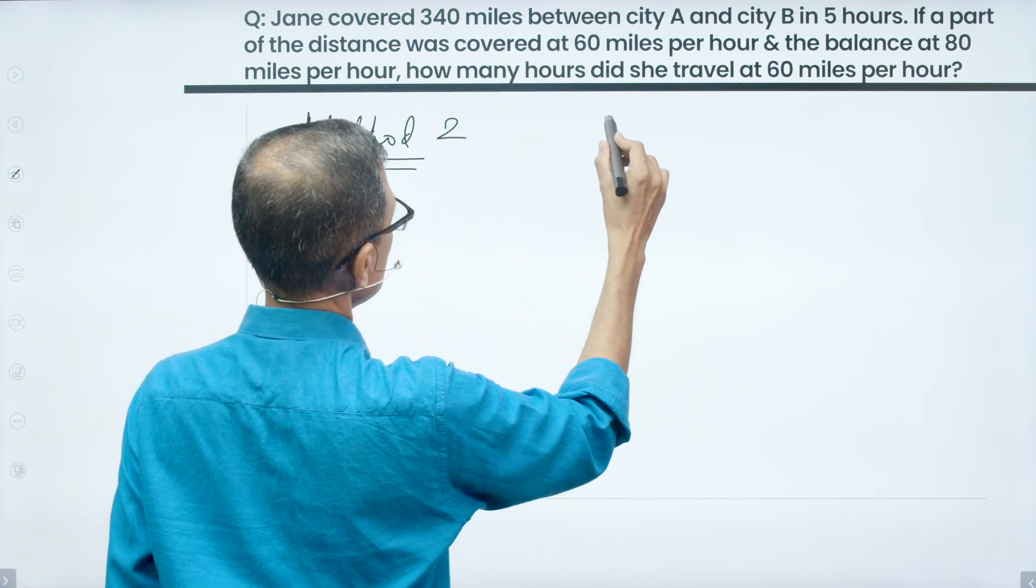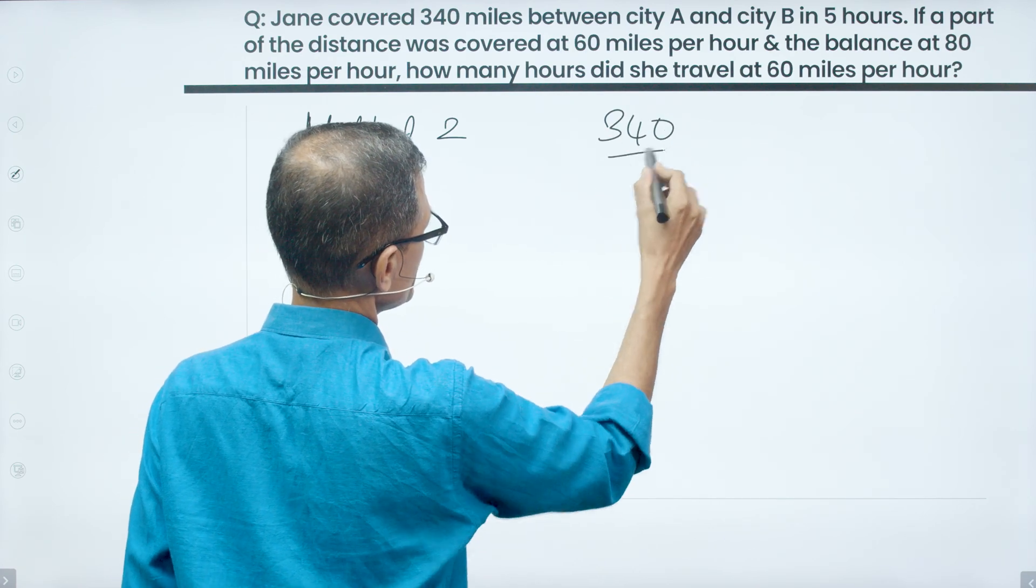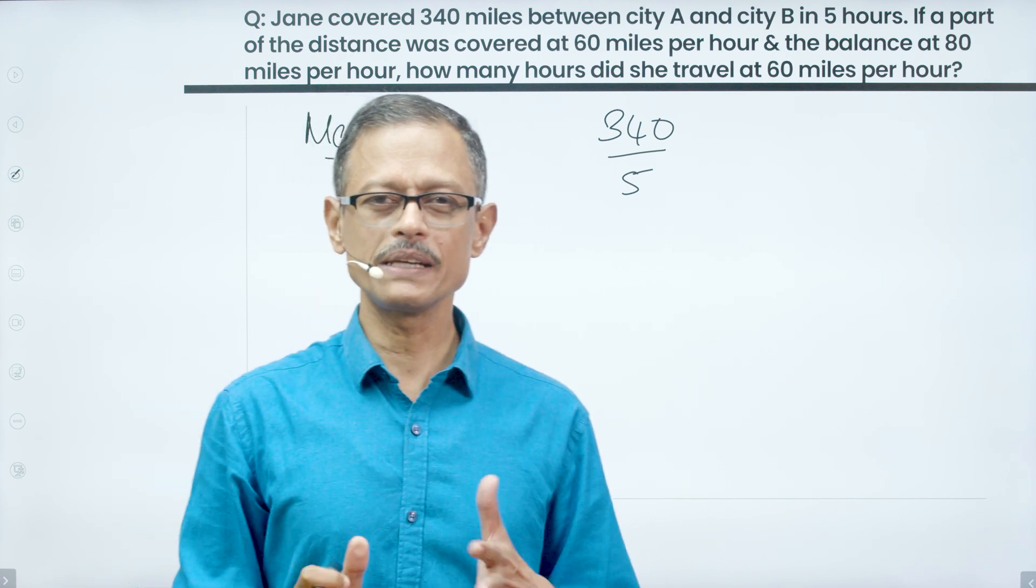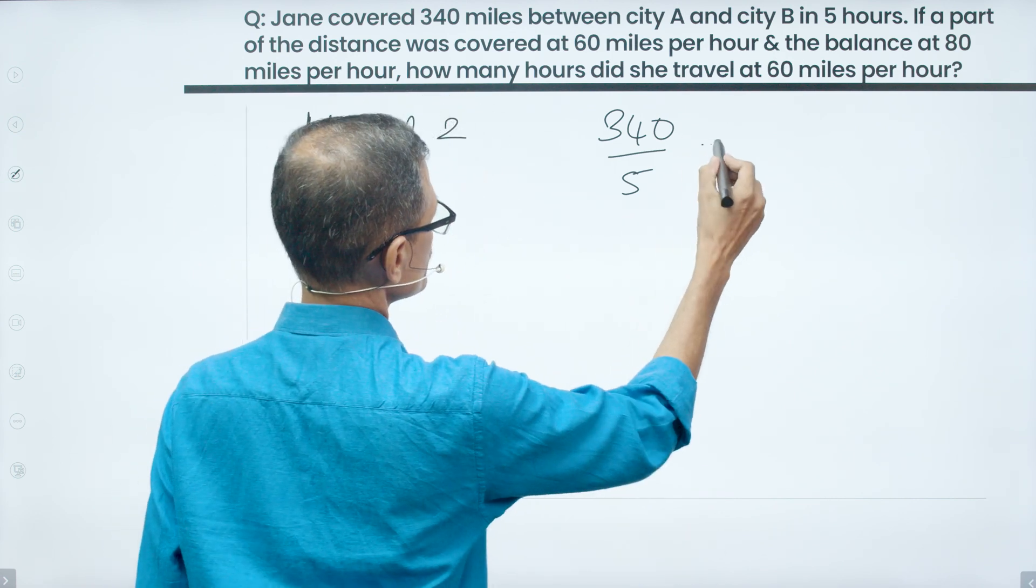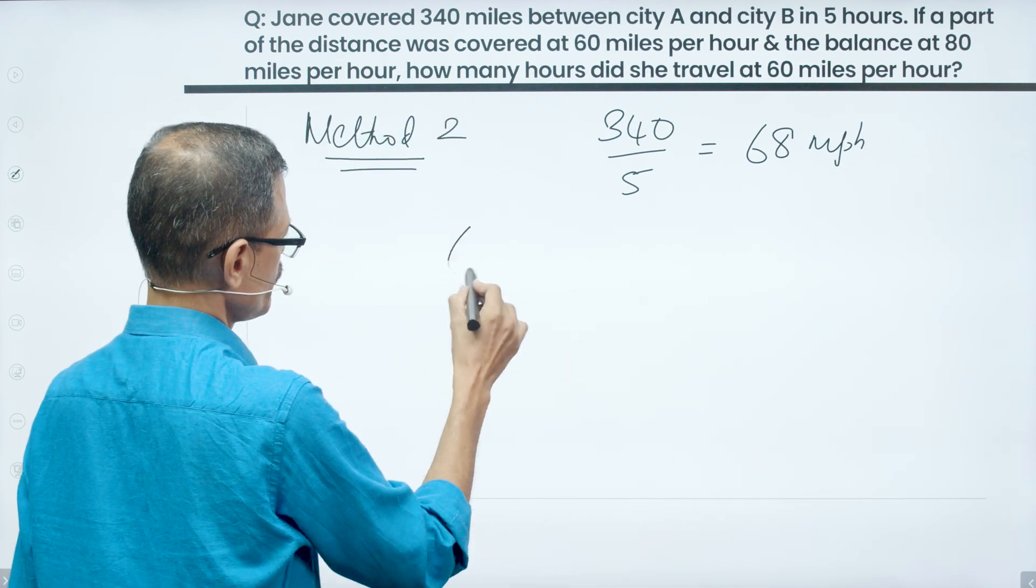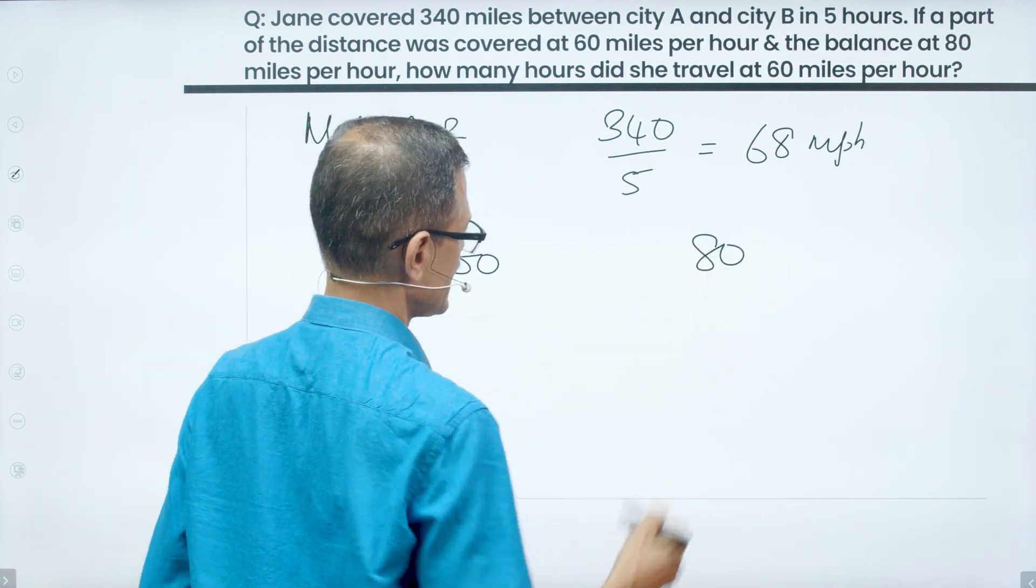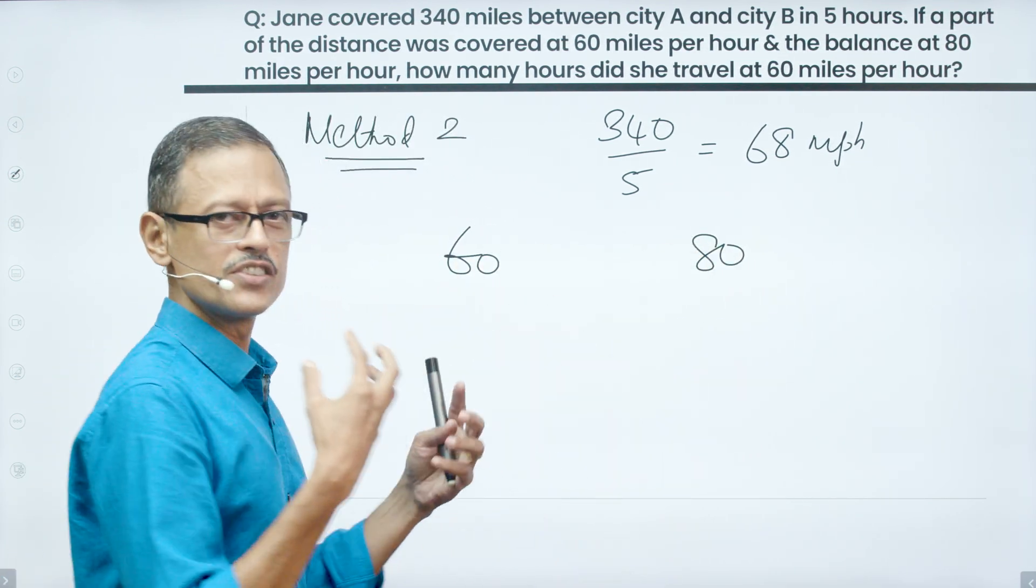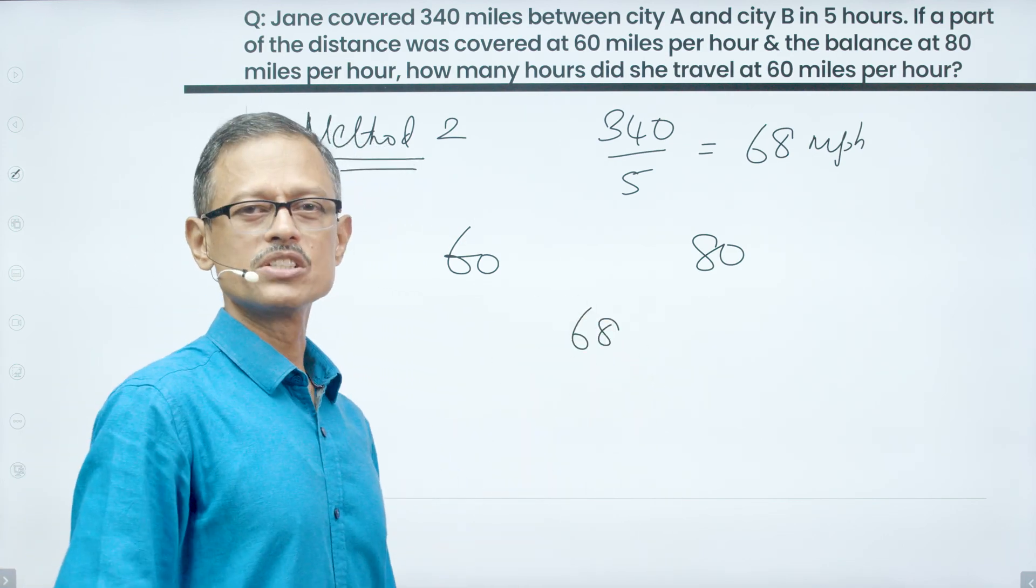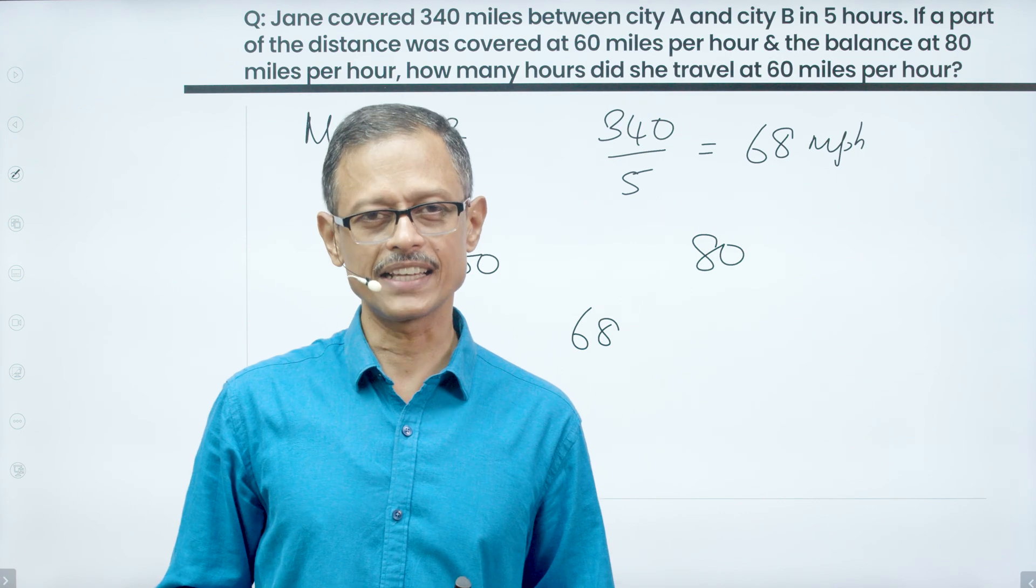She took a total of 5 hours to cover a distance of 340 miles. So 340 divided by 5 is the average speed at which she traveled. So that works out to 68 miles per hour. Part of it at 60, part of it at 80. The combination of these two in some ratio has resulted in 68 miles per hour which is a weighted average speed for this entire journey.